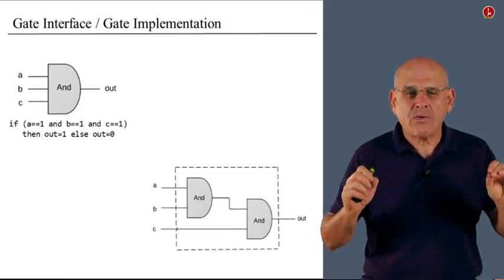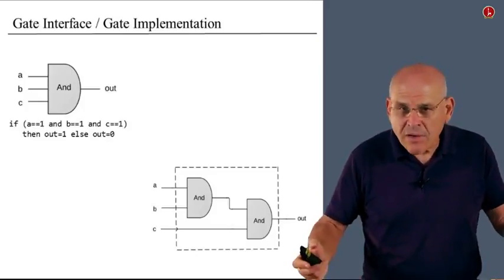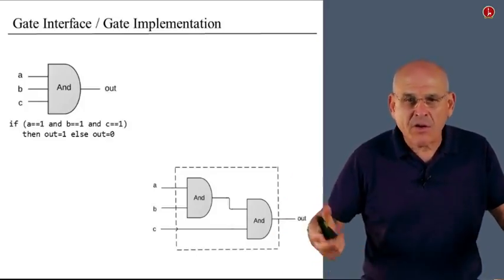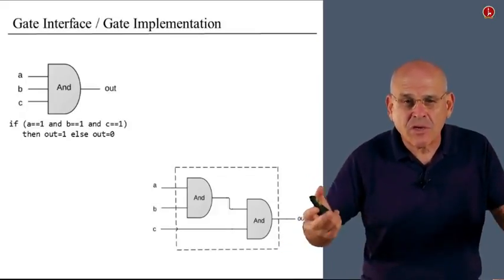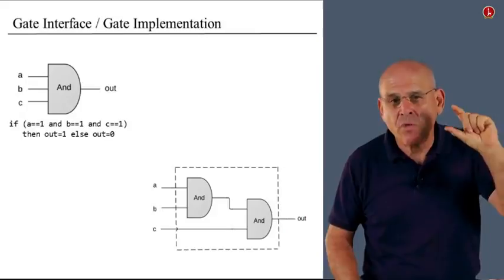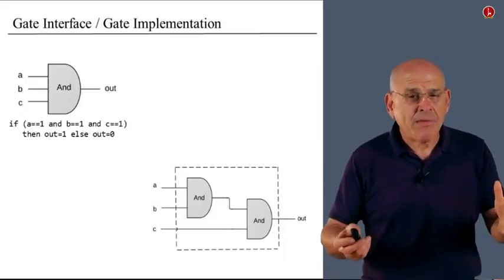Now, the interface of the gate is unique. There's only one way to describe the gate's functionality. Otherwise, if there's more than one way, either you're not describing it well or you're confusing the user because there should be only one unique way to describe what the gate is supposed to do.